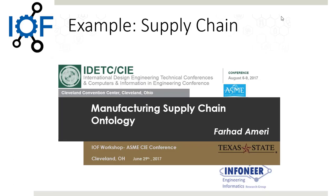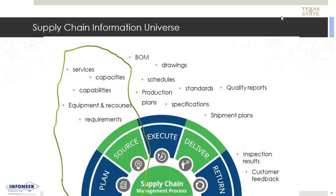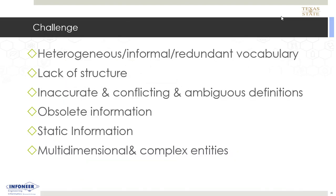I'll finish with a couple of remarks about one example: the supply chain. This comes from Farhad Amari, who is in the room, and he's been working on the manufacturing supply chain ontology within the IOF. Supply chain is about things like the capabilities of suppliers — which supplier can I use for this particular gadget I want to build? Which suppliers are geographically conveniently located, have the capabilities, the experience, the reputation? People and governments build databases of these things, and they all build them differently, and they don't work together.